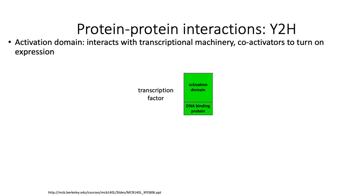The most classic kind of protein-protein interaction assay is the yeast-2 hybrid. Many transcription factors have at least two domains: one responsible for DNA recognition and binding — the DNA-binding domain — and the activation domain, which is responsible for interacting with transcriptional machinery, coactivators, and other transcription factors to facilitate changes in gene expression once DNA is bound.